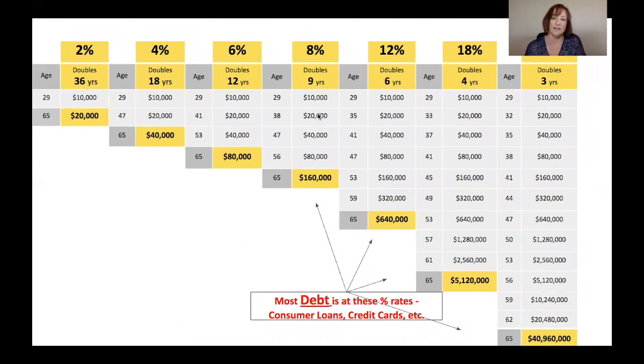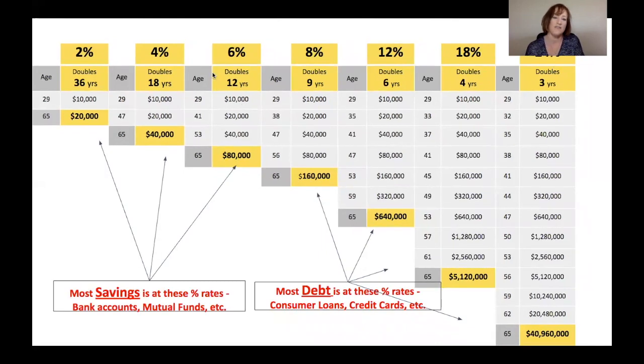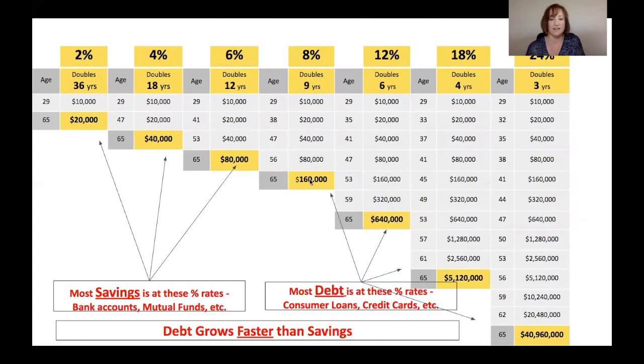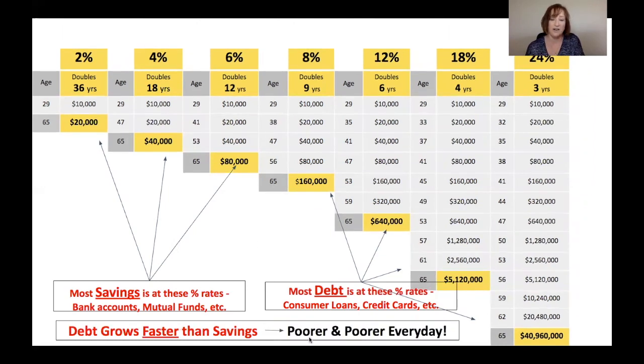Now, this is where most people's debt is right now. It's in this 8%, 12%, 18, and 24%. So that would be consumer loans, credit cards, car loans are in this area. This is where people's debt is. But most people's savings are over here. Most people have got their savings in just bank accounts or mutual funds, making hardly nothing. So what happens is their debt is growing faster than their savings. They're getting poor and poor every day. Their debt is growing. Every day, their debt is growing faster than their savings. So they're getting poorer and poorer without doing anything.